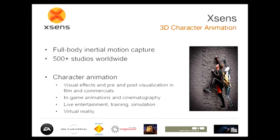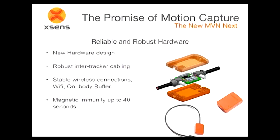The character animation segment is what most of you are interested in. In past iterations of the suit the focus was more on previs animation and didn't achieve the current level of fidelity. With the new iteration, we're seeing people push it for live cinematics, live entertainment, training simulation, and virtual reality applications. Xsens has 500-plus studios worldwide already using our systems. For this iteration, key improvements included robustness, tracker size, body placement, and wireless signal connection.